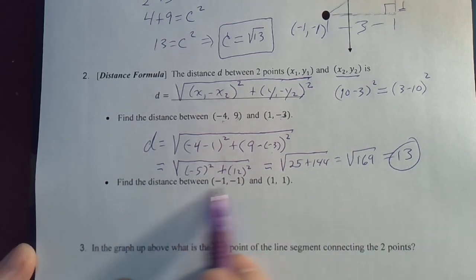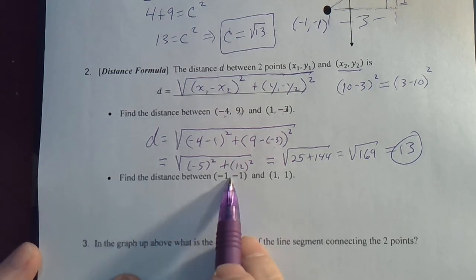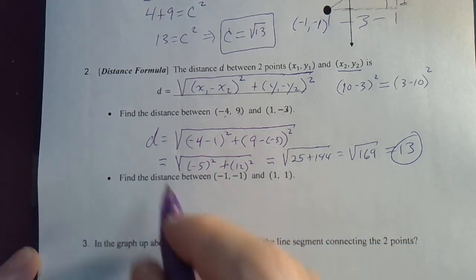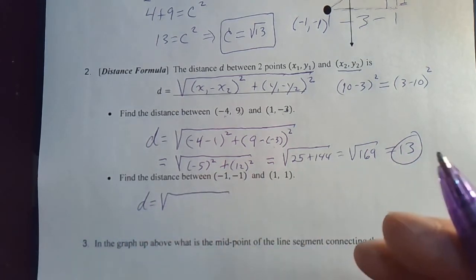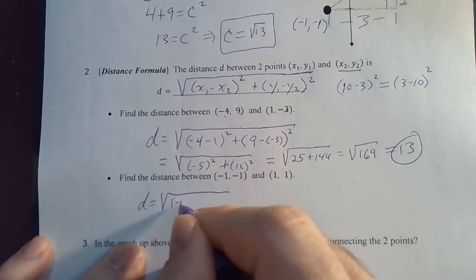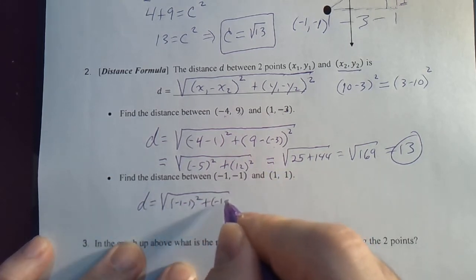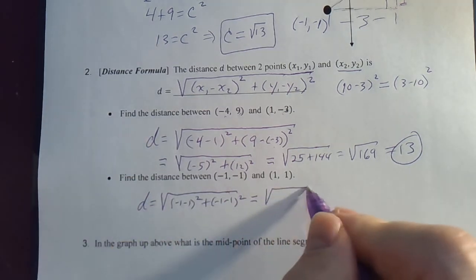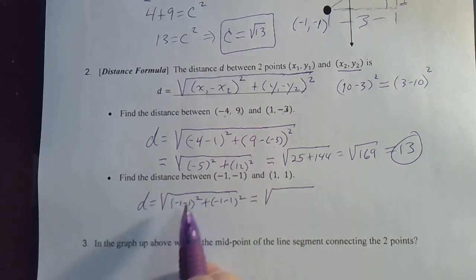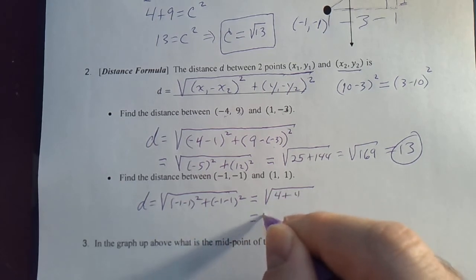Let's do a real simple one. Well, at least the numbers are small. So, the distance between negative 1, negative 1 and 1, 1. So, the distance d is negative 1 minus 1 squared plus negative 1 minus 1 squared. That's equal to negative 2 squared. And this is negative 2 squared. So, 4 plus 4, radical 8.